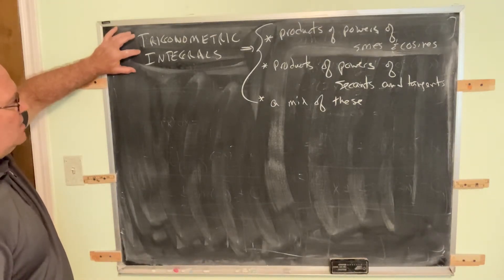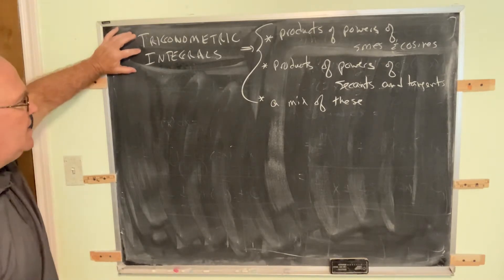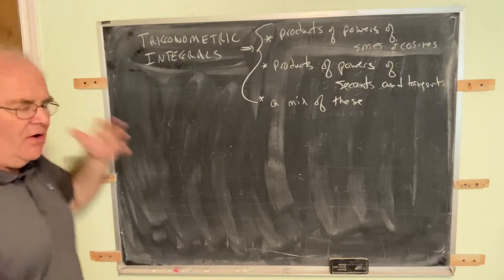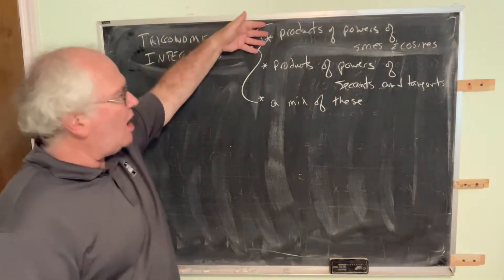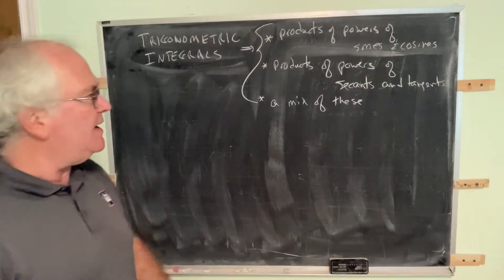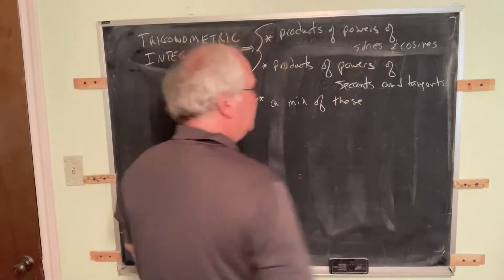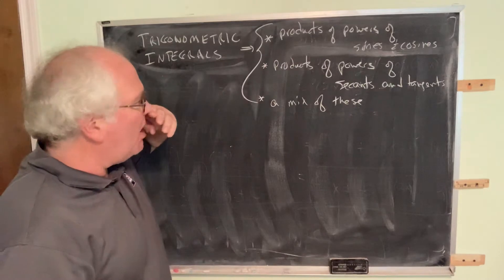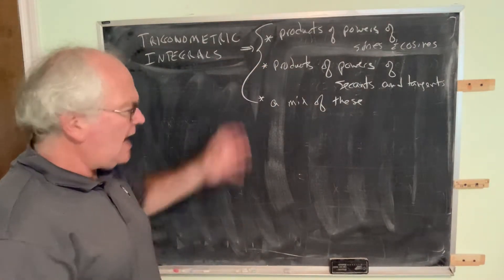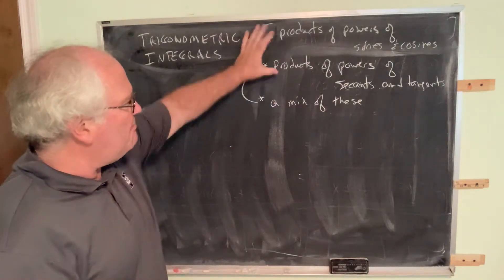We're ready to start talking about trigonometric integrals, the new topic here in section 3 of the text. When we talk about trigonometric integrals, there are essentially three varieties: products of powers of sines and cosines, products of powers of secants and tangents, and then the third possibility is a mix of these two.